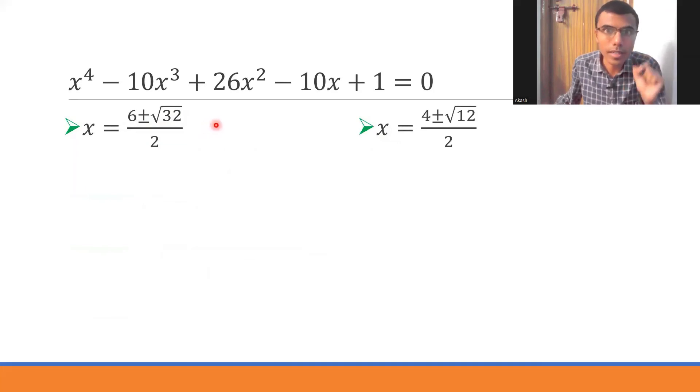√32 I can write as 16·2. So √32 I can write as √16·√2. Likewise I can write √12 as √(4·3). It's nothing but √4·√3.